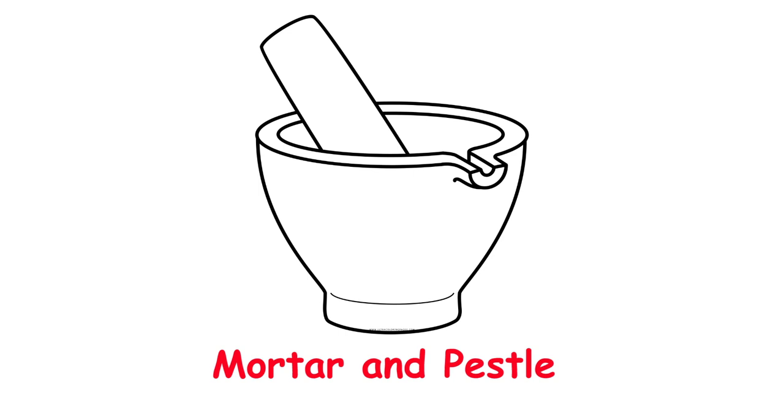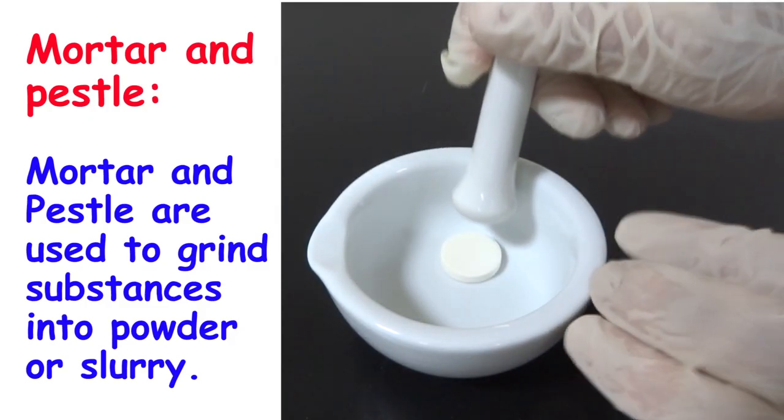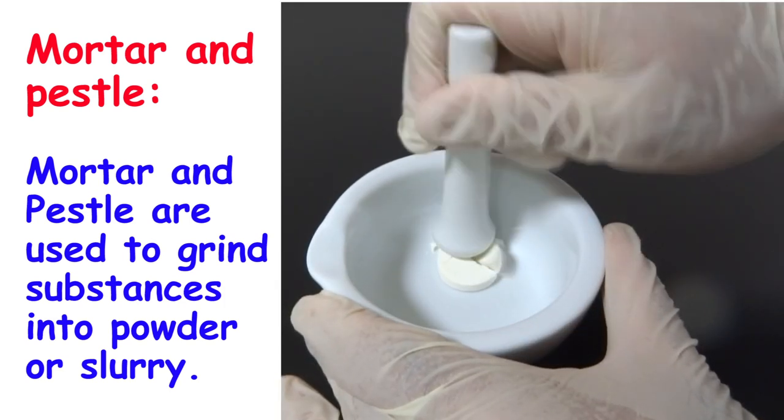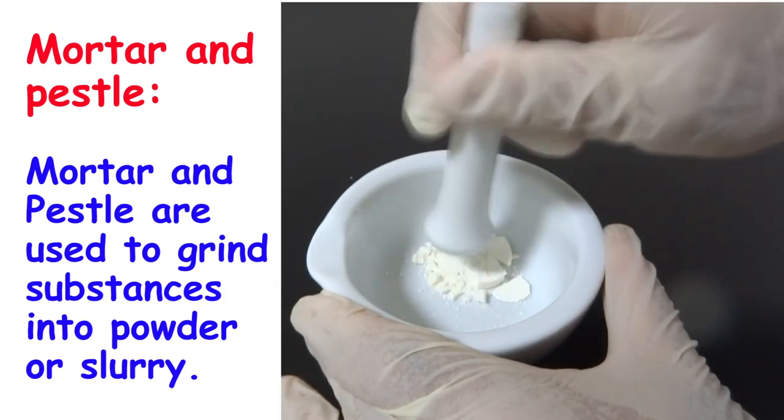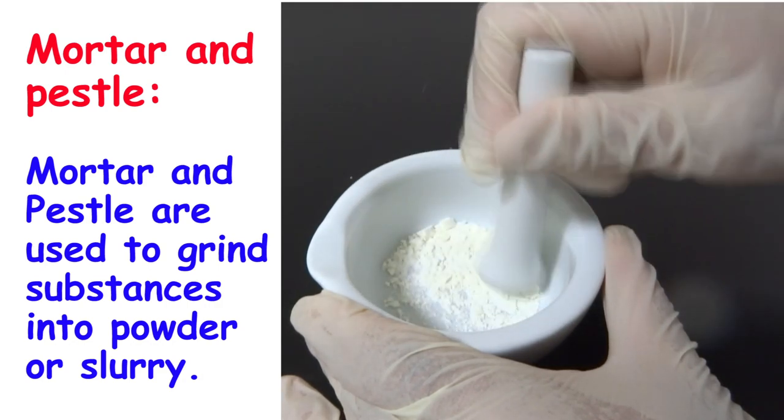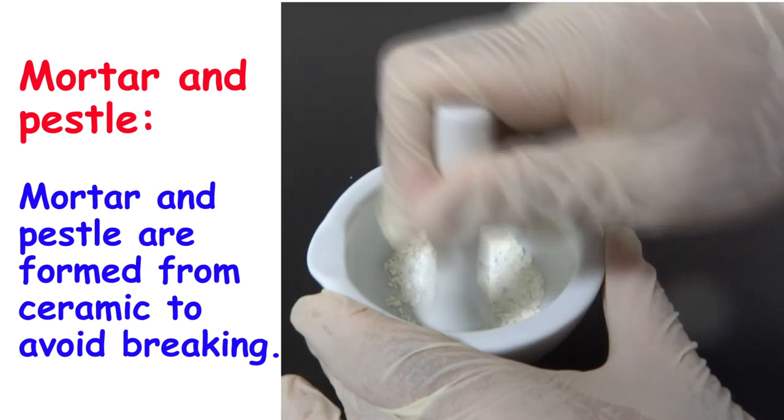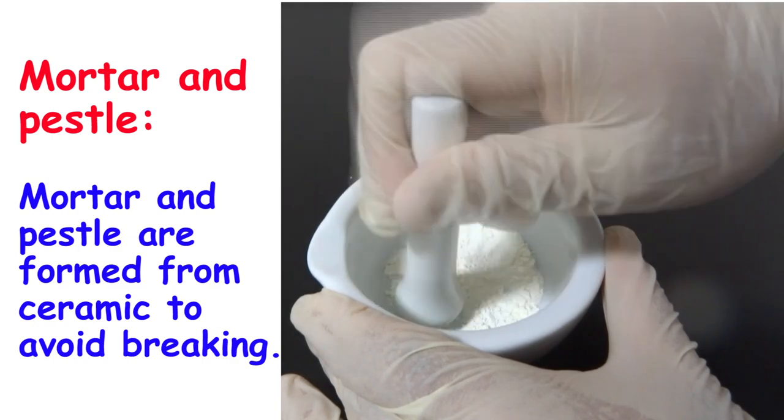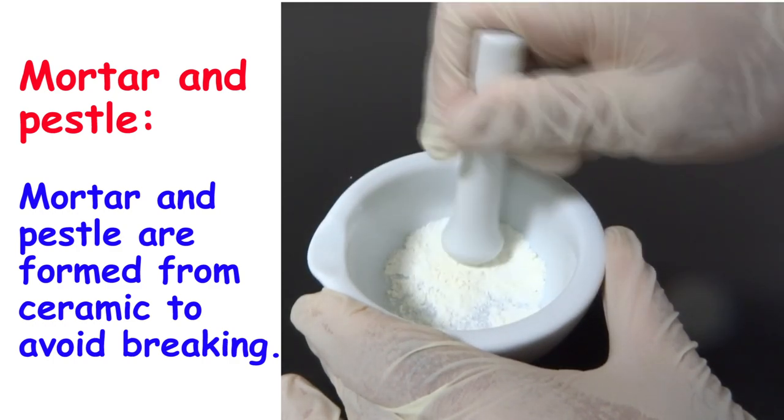Mortar and pestle are used to grind substances into powder or slurry. Look how this tablet of vitamin C is turned into powder. The other lab tools are formed from glass, while the mortar and pestle are formed from ceramic to avoid breaking.